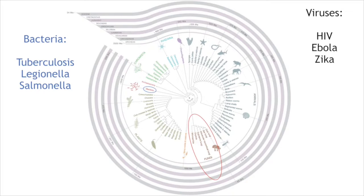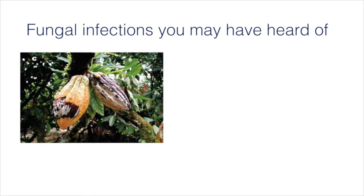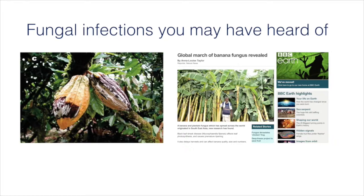Fungi can cause diseases, and you may not think you've heard of any fungal diseases, but you probably have. One of the most prominent fungal diseases over the past couple of years has been ash dieback, which has been heavily covered in the media and spread throughout the United Kingdom. Other diseases include a rust that infects the cacao tree, affecting chocolate production, and a fungus that infects banana plants, delaying harvest and affecting yield.